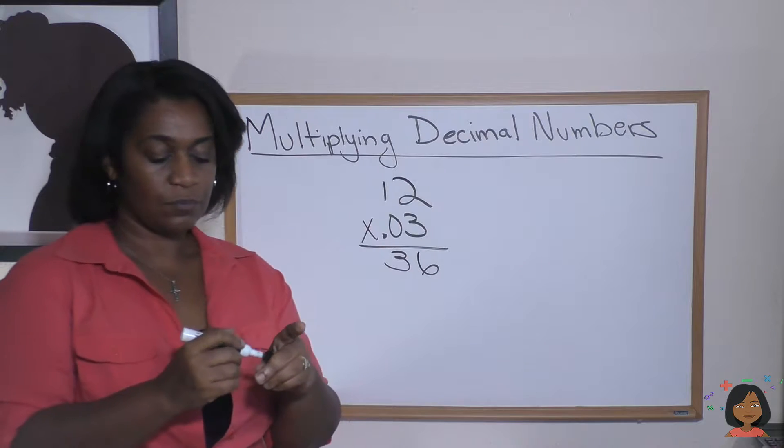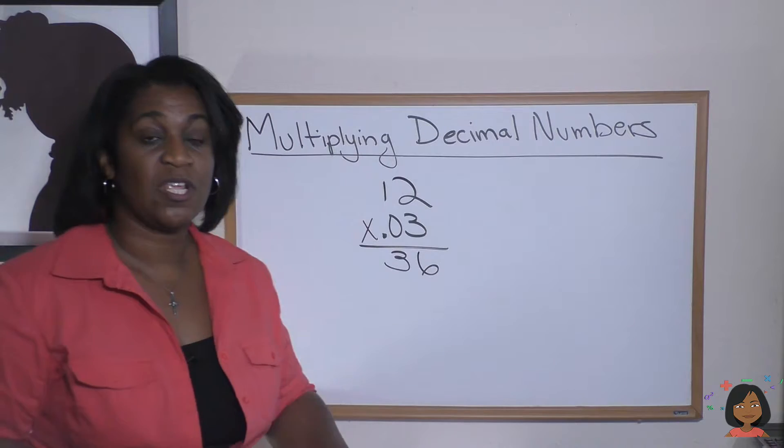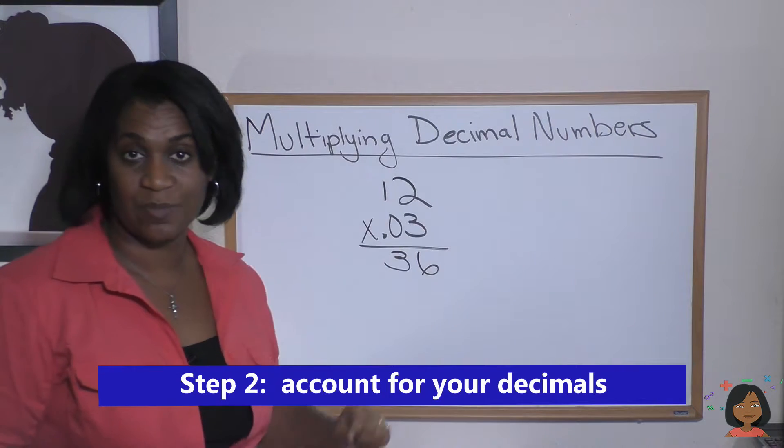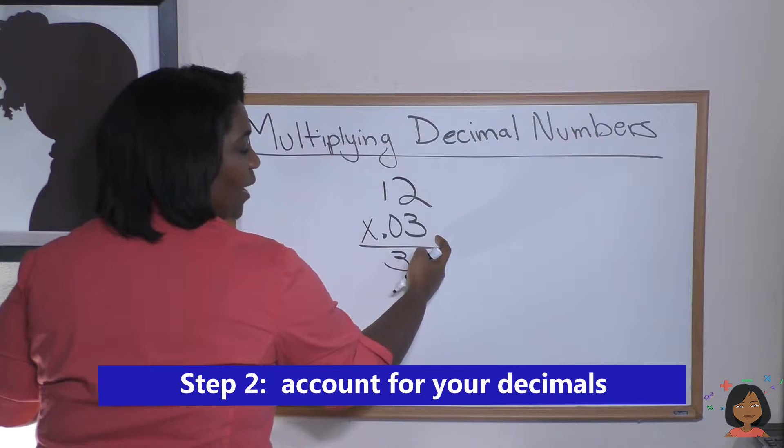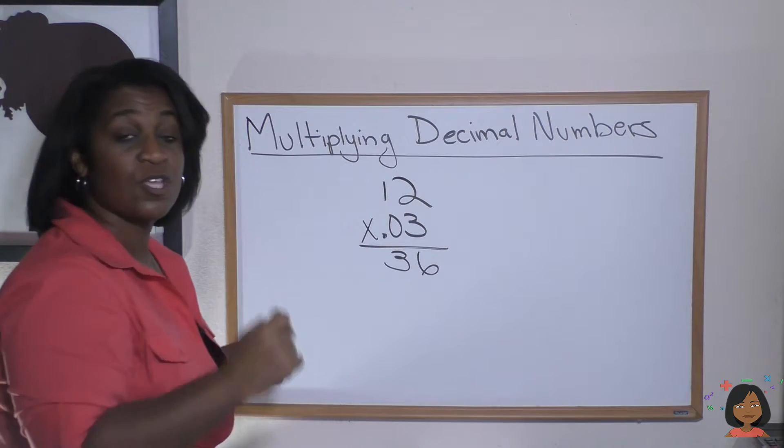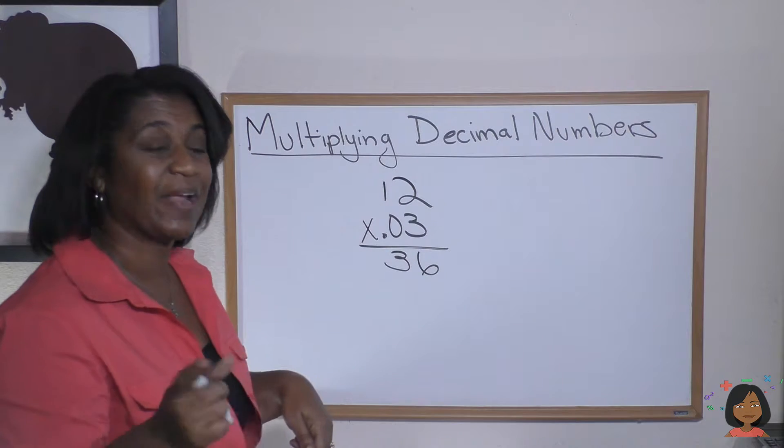Well, the thing we need to do at this point that's a little different than regular multiplication is we need to account for this decimal. We have a decimal that has two spaces, right? One, two. Two spaces. So we need to account for those two decimal spaces in our answer.